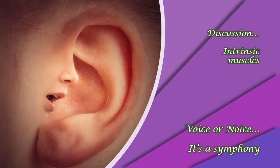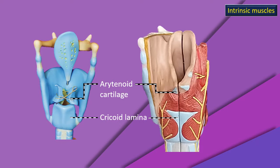Now let's begin the discussion of what these intrinsic muscles are, where they are present, what is their orientation, and how you dissect and identify them. That's why I call it voice or noise — it's a symphony. Finally, how these muscles coordinate with each other to produce the voice. A few introductory points which we already know from previous videos.